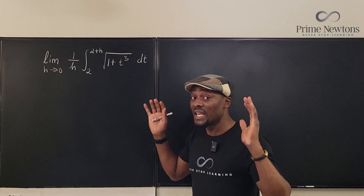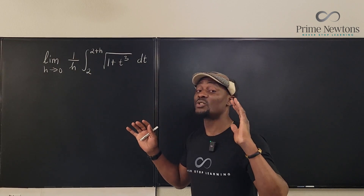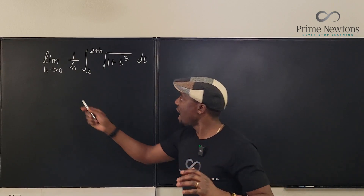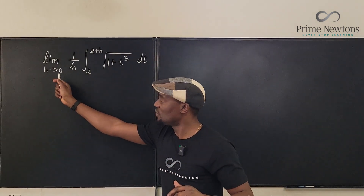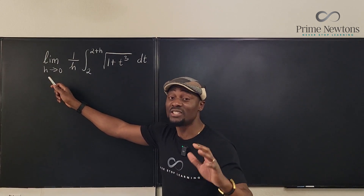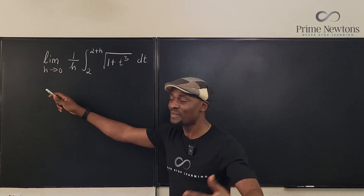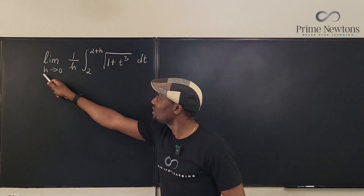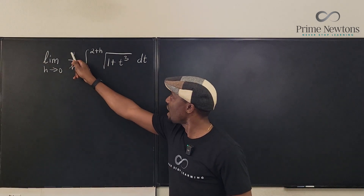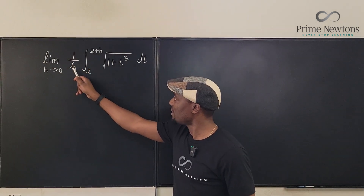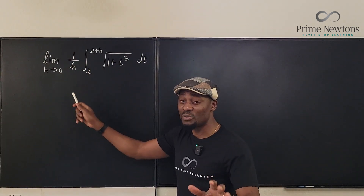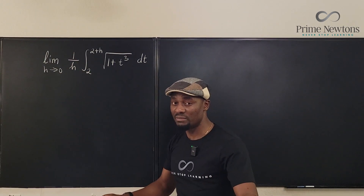Just by looking at it, let's try and see what happens. Not x — h is our variable. So h approaches zero, and here we have one over h, we have one over zero. That's already a problem.